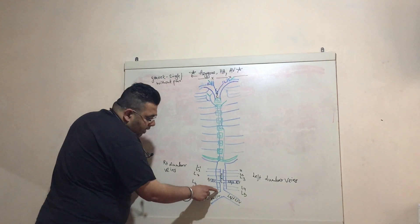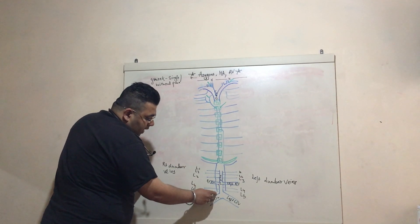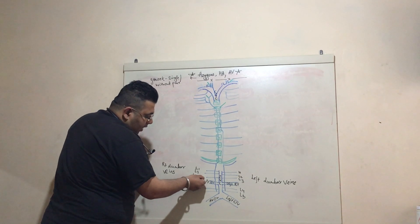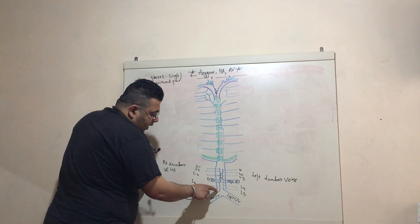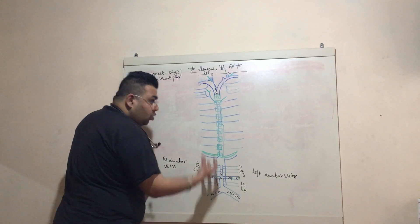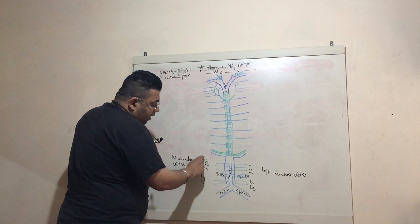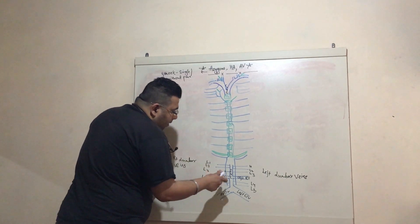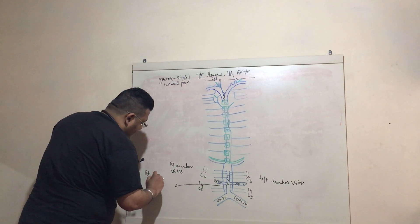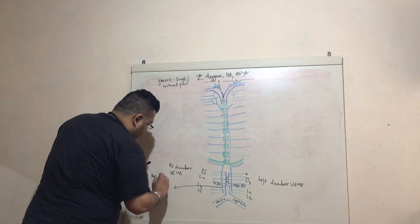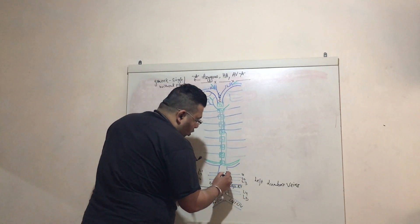There is a vein connecting the right lumbar veins from L1 to L5. It goes from down to up — ascending — connecting the right lumbar veins. That's why this structure is called the right ascending lumbar vein. Similarly on the left side, this structure is the left ascending lumbar vein.